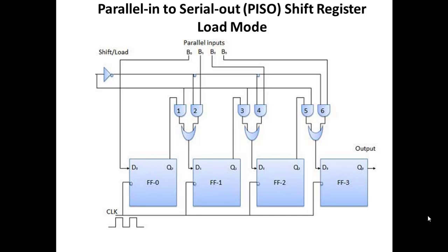For load mode, the control input — the shift or load input — will be 0. This combinational circuit uses AND gates and OR gates connected to the input of each and every flip-flop. If I am giving 0 at the control input, the shift register will be operated in load mode. Since the control is 0, passing through a NOT gate gives 1, so the left-side AND gates (1, 3, 5) will have one input as 0, making their outputs 0.